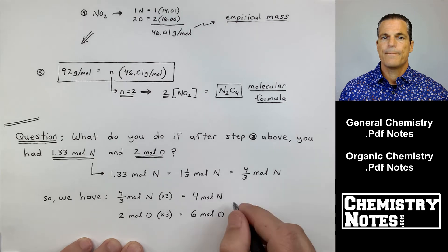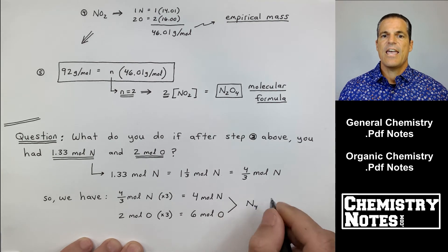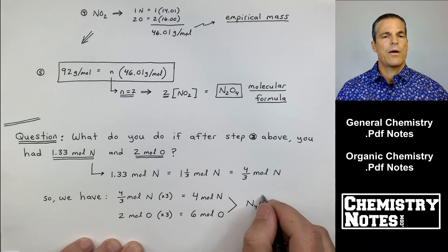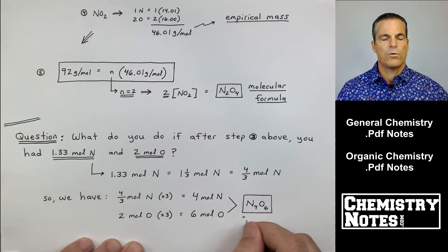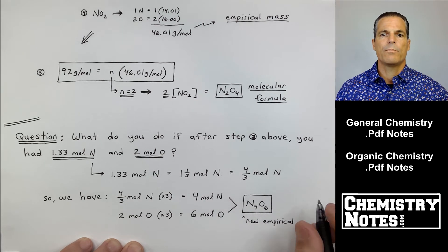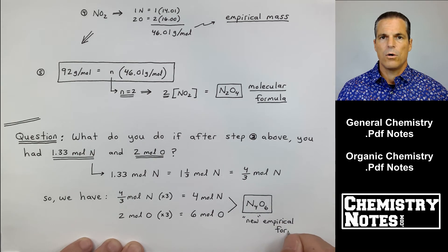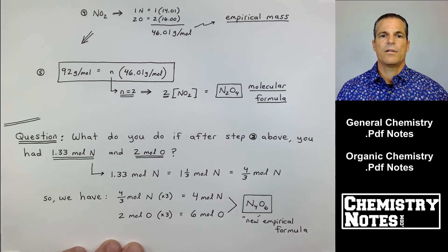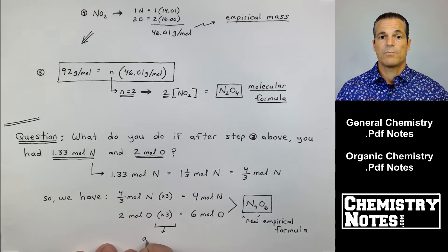through by three, and I get N4O6. Now I realize that's not the simplest whole number ratio if you will, but I can't keep it N1.33O2.